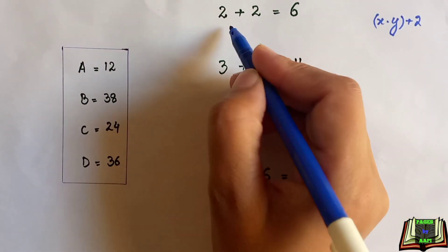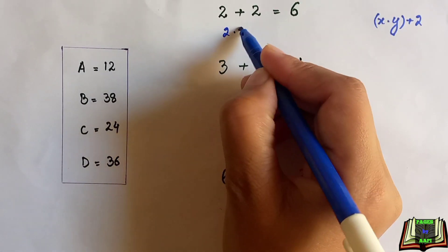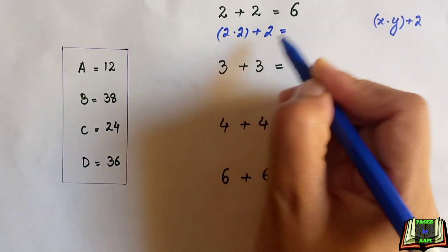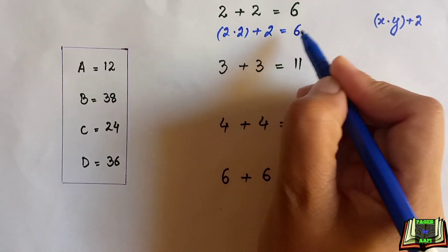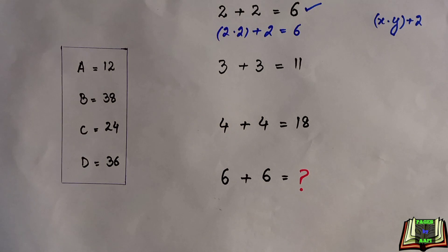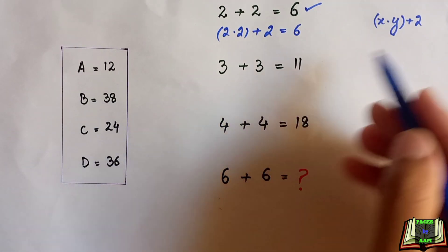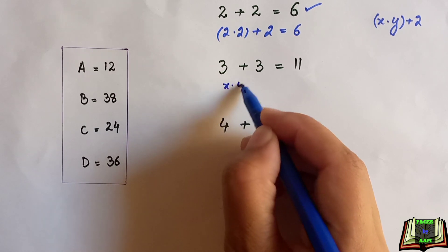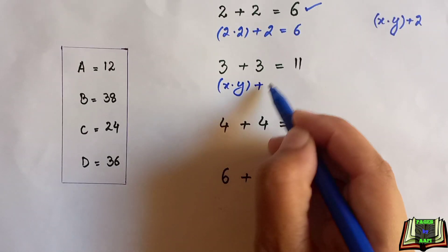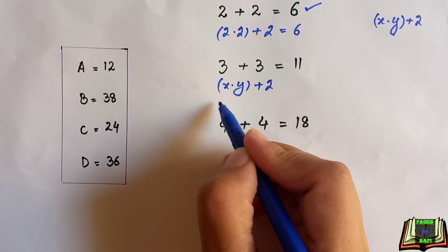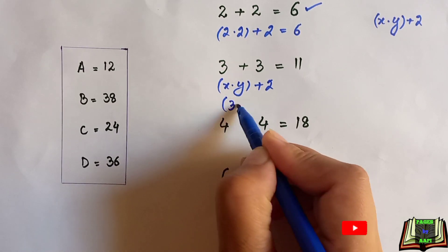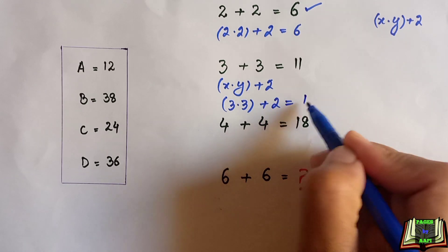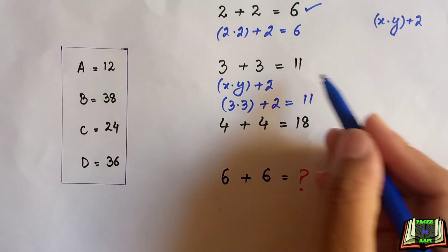Let's check: 2 times 2 plus 2 — we know 2 times 2 is 4, and 4 plus 2 is 6. So these numbers are placed correctly using this pattern. For the next one, x times y plus 2: x is 3 and y is also 3, so 3 times 3 is 9, plus 2 is 11. This is also correct.